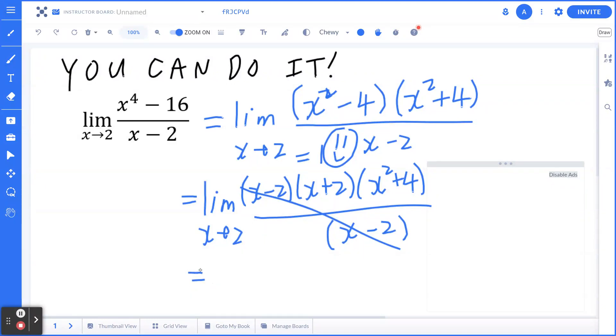You plug in x to be 2. You can do a little bit of mental math. You can take the calculator. If you take 2 plus 2, that's going to be 4. 2 squared plus 4 is going to be 8. And 8 times 4 is going to be exactly 32.